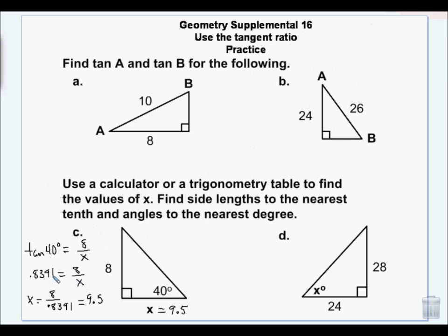Here's what happens. If I have a situation like this, what I would do is I would multiply both sides by x, and then I would divide both sides by 0.8391. So if you have your variable on the denominator and just a number over here, you can switch places. So tangent of 40 gave me 0.8391, and then I divided 8 by 0.8391, and I got 9.5.